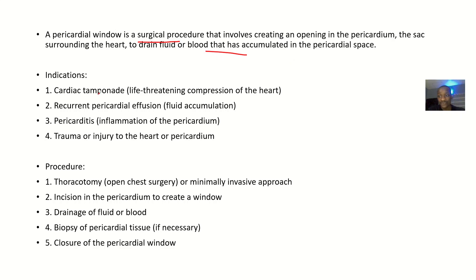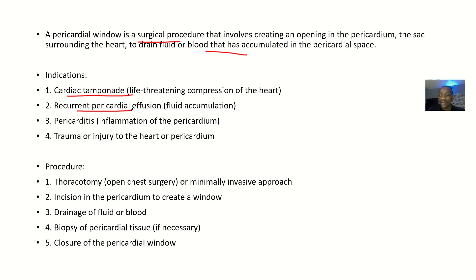Indications — when to do this surgery: if a patient has cardiac tamponade, which is a life-threatening compression of the heart resulting from accumulation of fluid or blood around the heart. If the patient has a recurring pericardial effusion — where as you treat it, it keeps coming back — you need to do this surgery to relieve that. If a patient has pericarditis, since inflammation can lead to formation of pus around the heart. It could also be due to trauma or injury to the heart or pericardium.